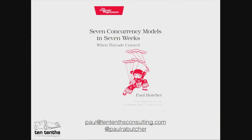So who am I? My name is Paul Butcher, and I'm the author of this book, "Seven Concurrency Models in Seven Weeks," published a few months ago by the Pragmatic Programmers. And that's my reason for being here.